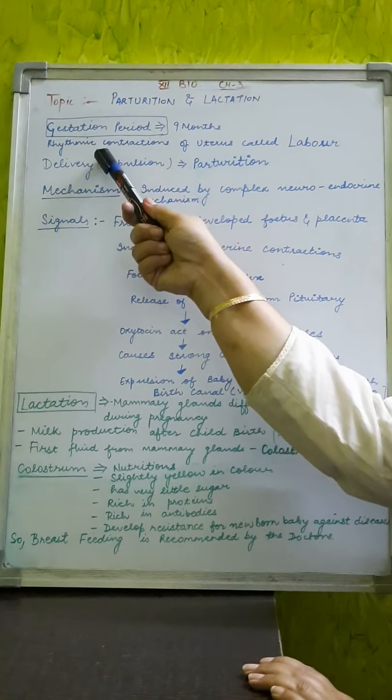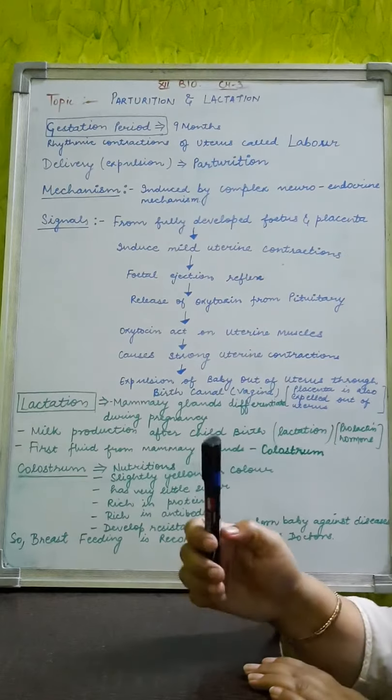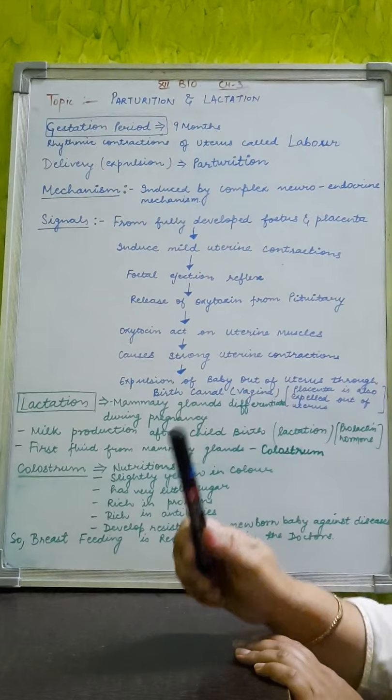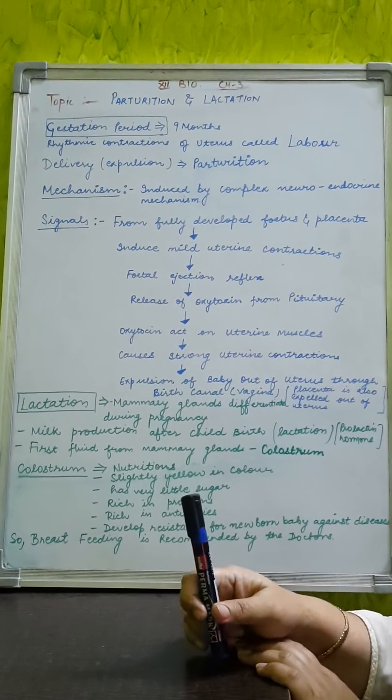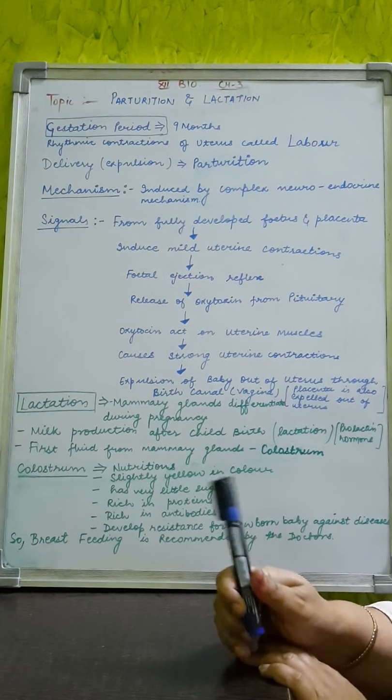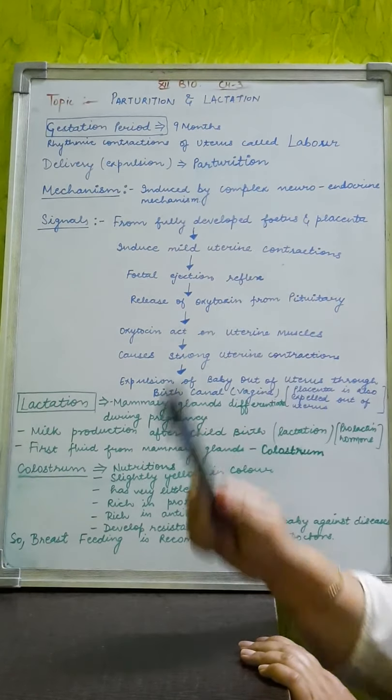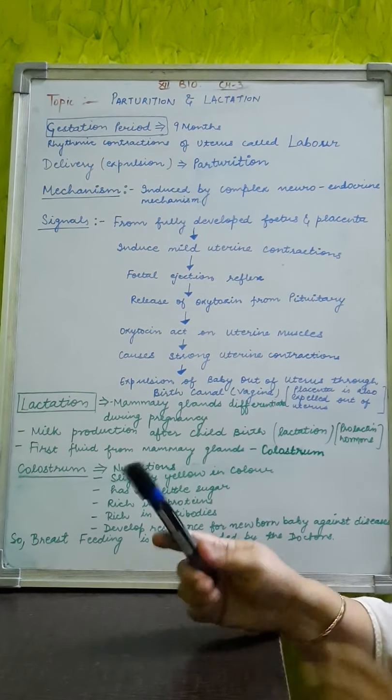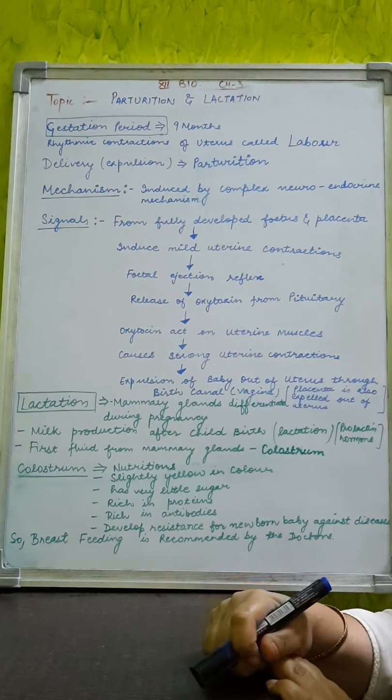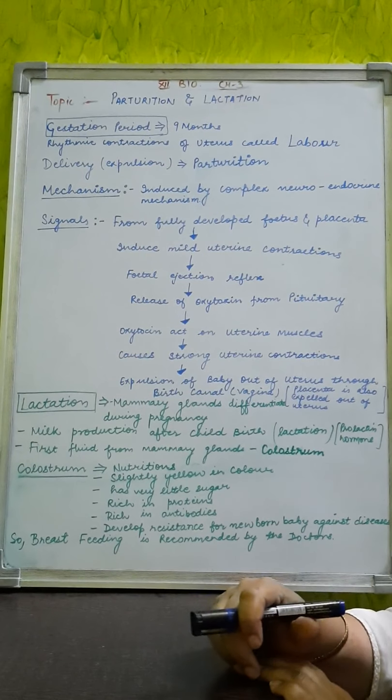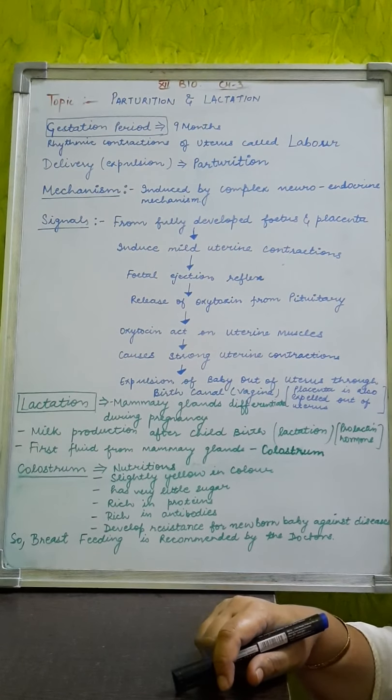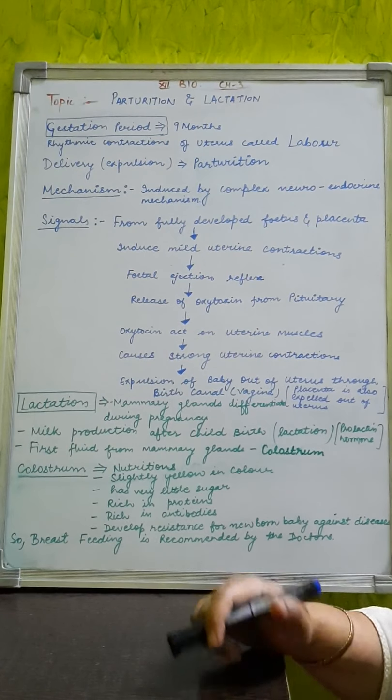It is the delivery of the child or expulsion of the child out of the female body and what causes it? This is due to the rhythmic contraction of uterus of mother and this is called labour, as this name is particularly common in day to day life that is labour pains. So these contractions are called as labour. What is the mechanism behind it? It is under the control of neuroendocrine mechanism, that is a nervous system as well as endocrine system controls it.